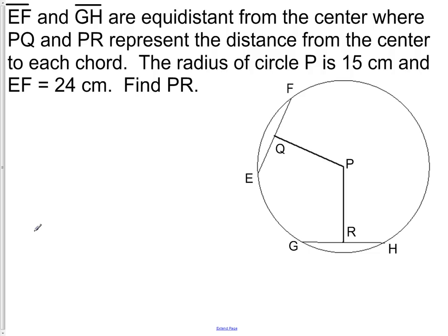Here's a question based on what we've been learning. Segment EF and GH are equidistant from the center, where PQ and PR represent the distance from the center. The radius of circle P is 15 centimeters, and EF is 24 centimeters. Find PR.